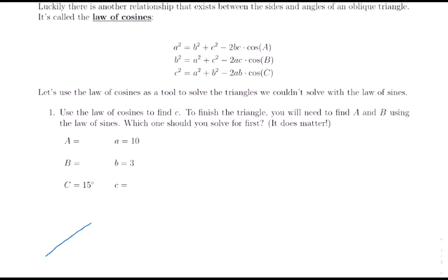We'll solve two triangles. First, let me draw a picture for triangle number one. We have angle C = 15°, side a = 10, and side b = 3. This is a side-angle-side triangle, so we cannot use the Law of Sines — we are going to use the Law of Cosines.